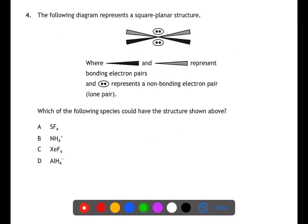For question four, we need to use the VSEPR rules. We can see from the diagram that this structure contains four bonding pairs and two non-bonding pairs of electrons. This gives a total number of electron pairs as six.